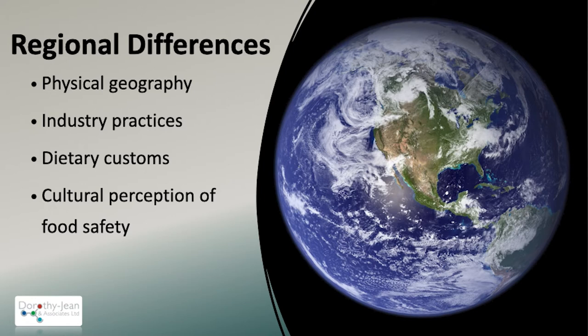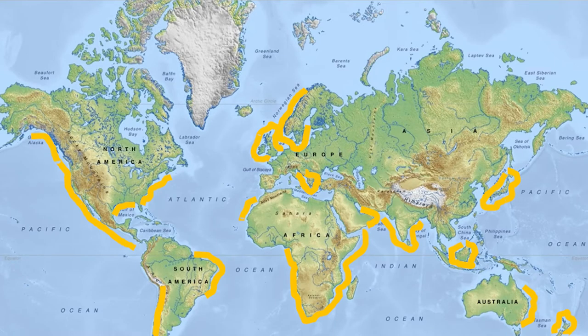Although Vibrio is a global problem, it's not exactly the same problem everywhere. Even within countries, you'll find differences in physical geography. Industry practices might differ, particularly if some are farming shellfish whereas others are dredging from the wild. You'll have different dietary customs and different perceptions about what is a safe food. In a country the size of Australia, the United States, or Canada, bigger means more diverse problems because of physical geography. I showed a map early on with VP outbreaks around the world — my cardboard box of references probably wasn't big enough.